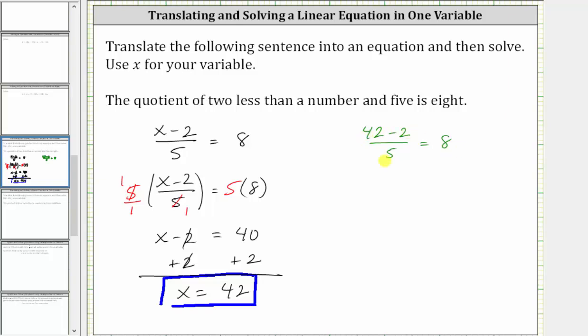Simplifying, 42 minus two is 40, giving us 40 divided by five equals eight. And 40 divided by five is eight. Eight equals eight is true. Verifying the solution is correct. I hope you found this helpful.